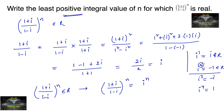Therefore n equals 2. This is the least positive integral value for which i to the power of 2 is minus 1, which is a real number.